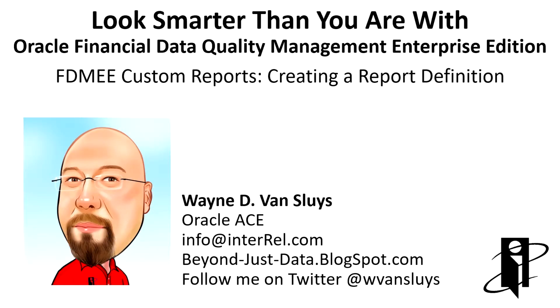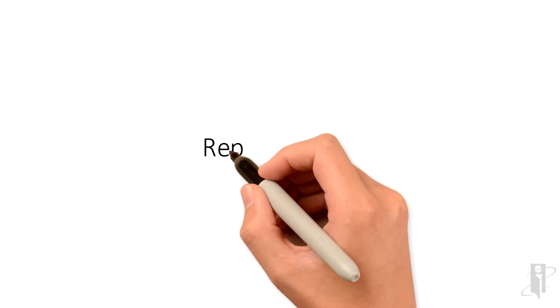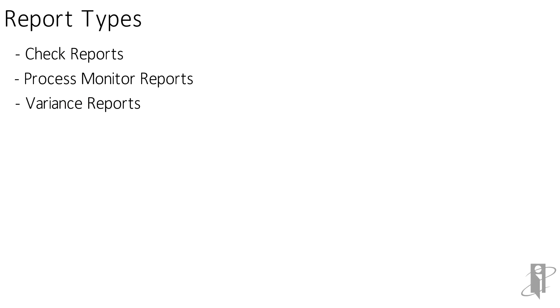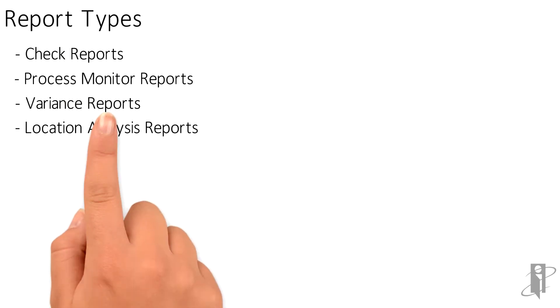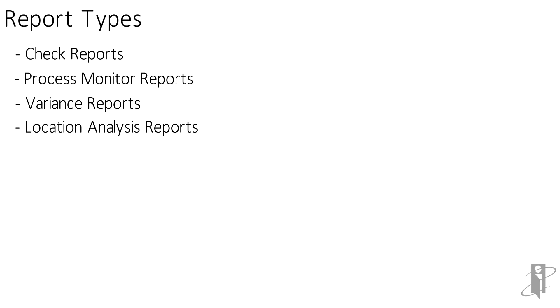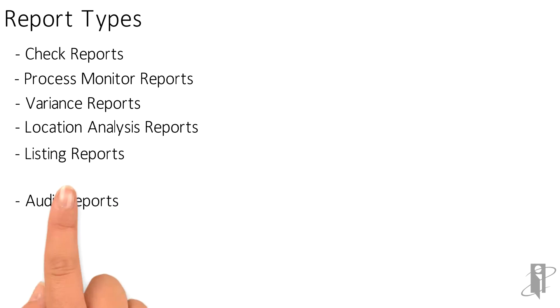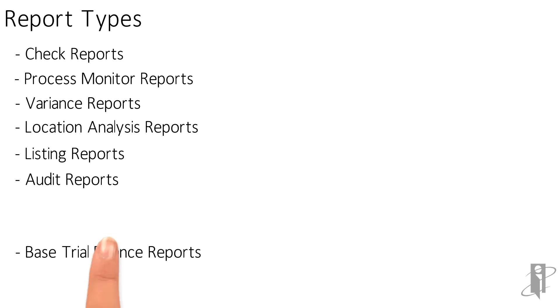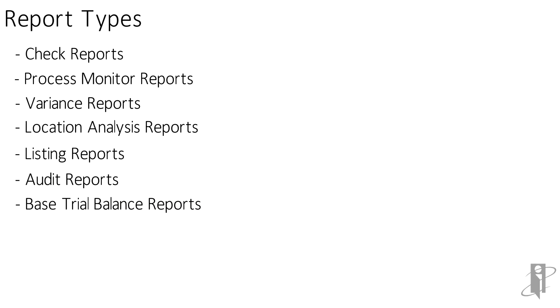Welcome to Look Smarter Than You Are with FDMEE Custom Reports. Within FDMEE there are eight different types of reports: the check reports, your process monitor reports, variance reports, location analysis reports, listing reports, audit reports, base trial balance reports, and intersection reports.